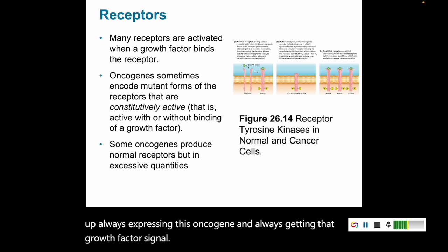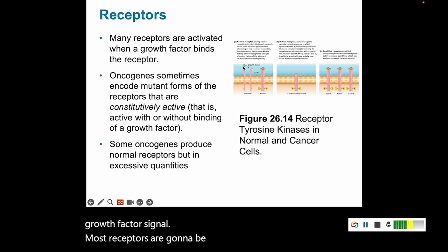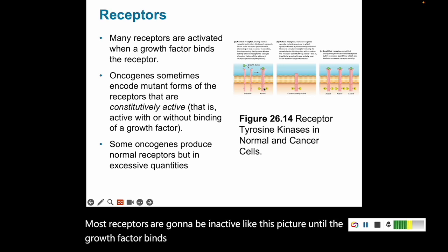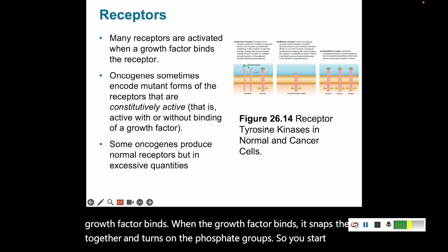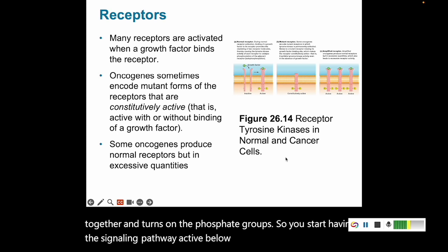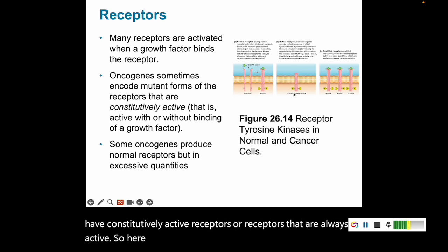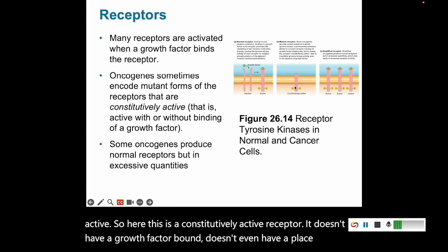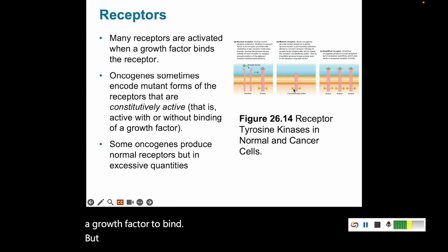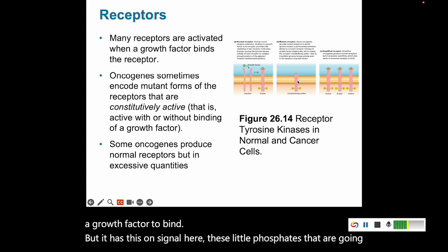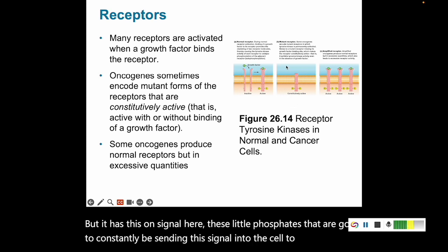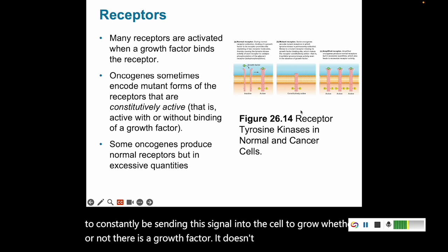Most receptors are inactive until a growth factor binds. When the growth factor binds, it snaps them together and turns on the phosphate groups, making the signaling pathway active. Oncogenes sometimes produce constitutively active receptors — receptors that are always active. A constitutively active receptor doesn't have a growth factor bound and doesn't even have a place for one to bind, but it has phosphates constantly sending the signal into the cell to grow, regardless of whether a growth factor is present.